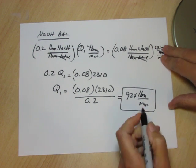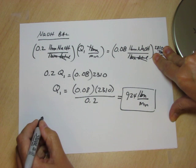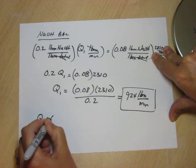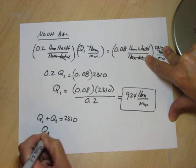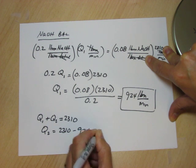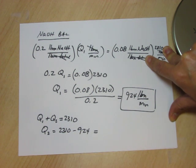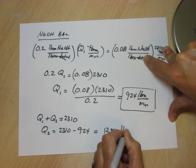For Q1, we just have to go back to the overall mass balance to solve for Q2. The overall mass balance said Q1 plus Q2 equals 2310. And so Q2 must equal 2310 minus 924 or 1386 lb/min.